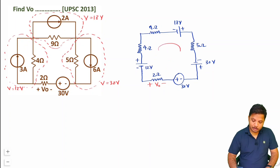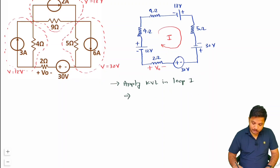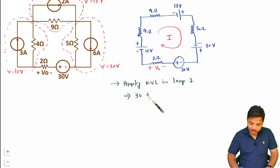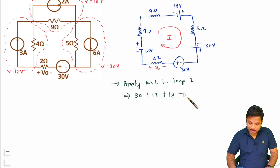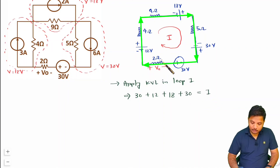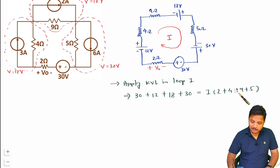Now we have just a single loop. We can calculate loop current I by applying KVL in this loop. Starting from the first voltage source going from minus to plus, that is +30 volts. The next voltage source also goes from minus to plus, so +12 volts. The next is also minus to plus, so +18 volts. The last voltage source is also minus to plus, giving +30 volts. That equals current I times all resistors: 2 + 4 + 9 + 5 ohms. There is only one loop.